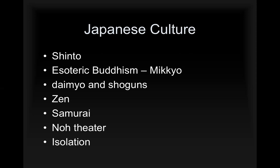The themes we'll be looking at include the local animistic religion Shinto, esoteric Buddhism known as Mikkyo in Japan, Daimyo and the Shoguns, Zen, the samurai, No theater — and we'll also talk about Kabuki theater when we get towards the end — and the idea of isolation.